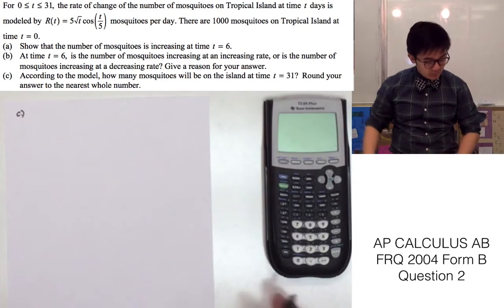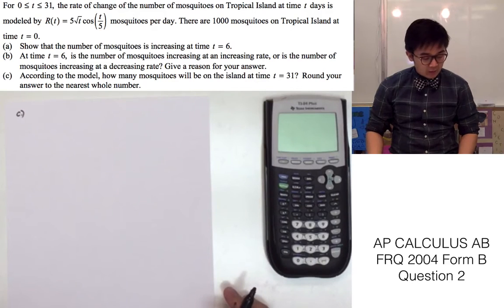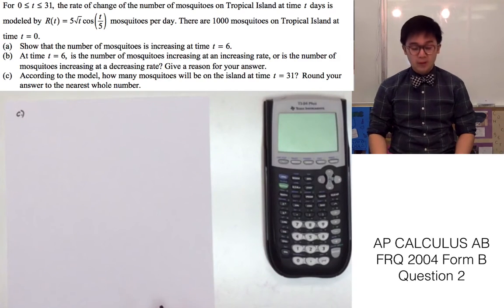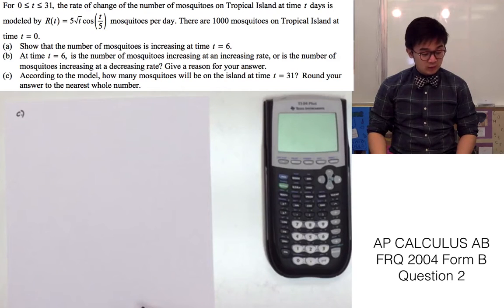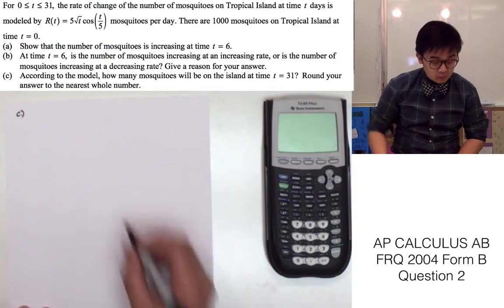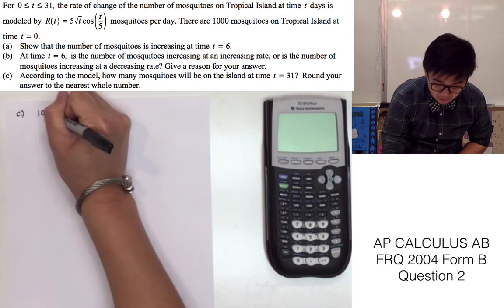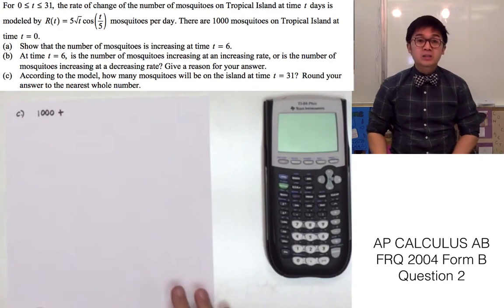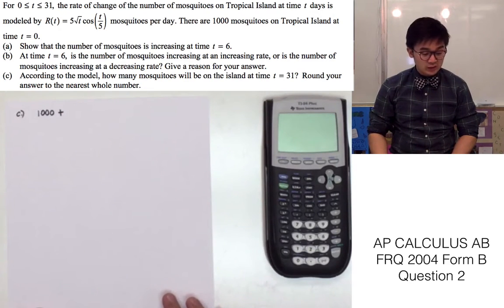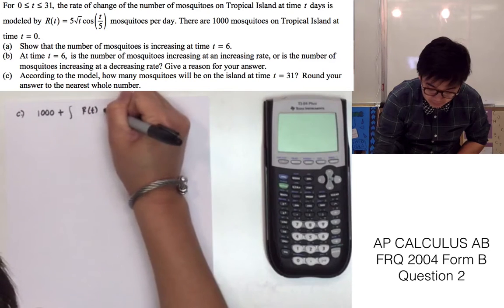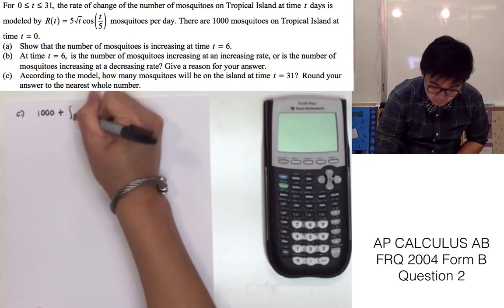For part C, we are asked to find how many mosquitoes will be on the island at t equals 31, rounded to the nearest whole number. We need to write the model that will help us find this. Since there are 1,000 mosquitoes at t equals 0, the model is 1,000 plus the integral from 0 to 31 of r(t) dt.